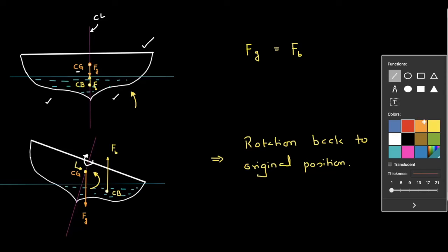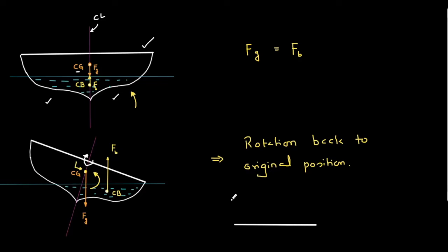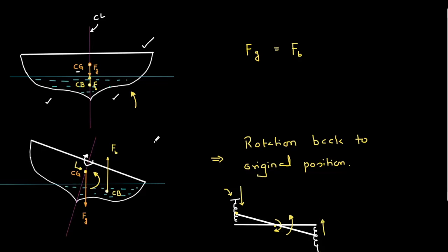The situation is like a rod with springs at both ends. If you try to rotate the rod, one spring force pushes down and the other pushes up, so as soon as you release it, it tries to go back. That is what is happening here — there is a spring-like restoring action which tries to make sure the boat goes back to its original upright position.